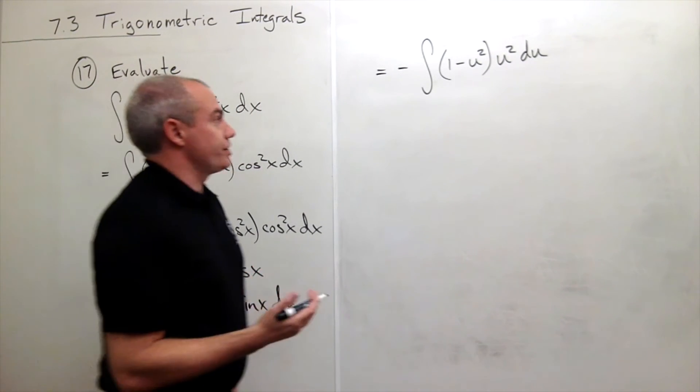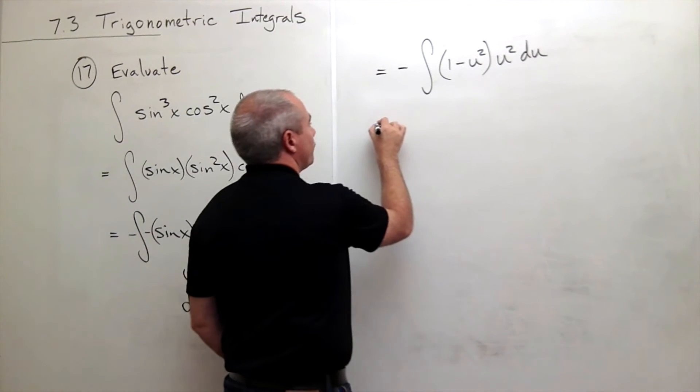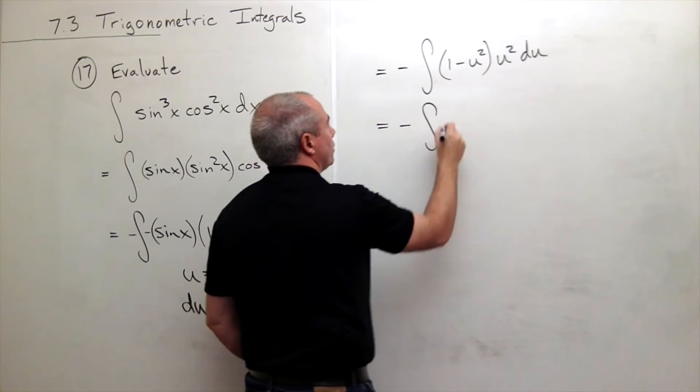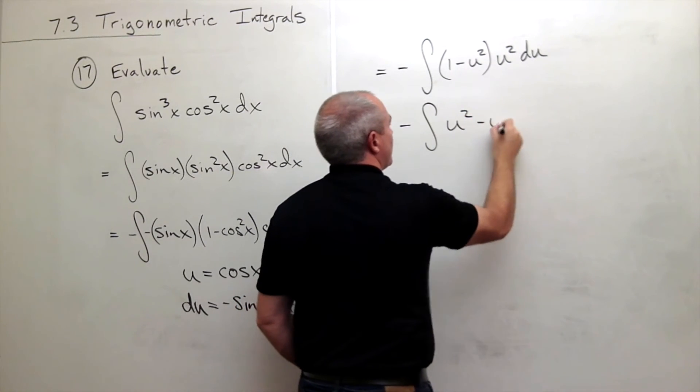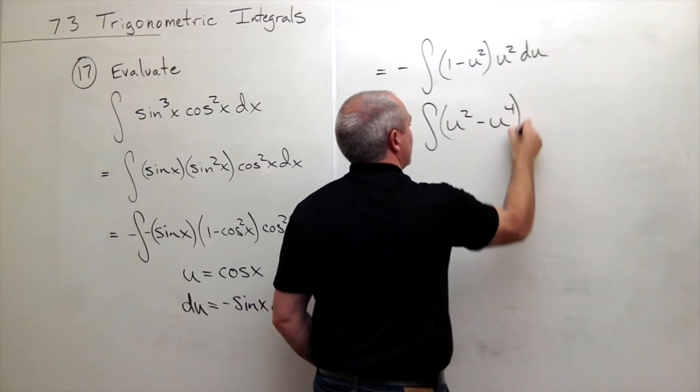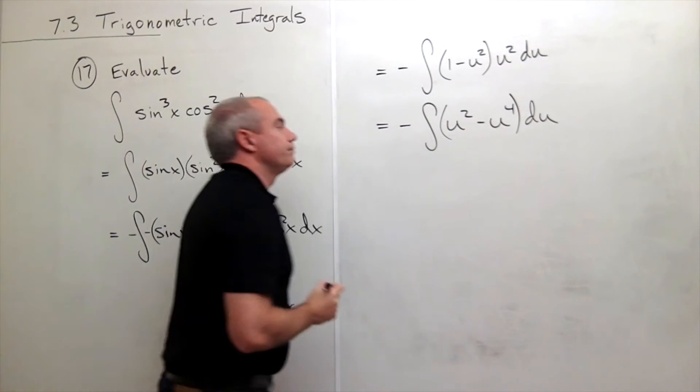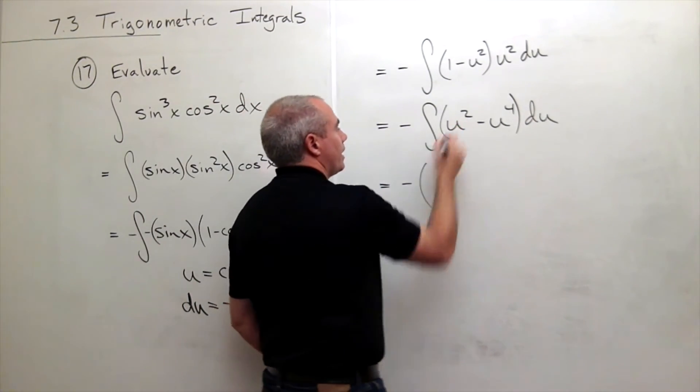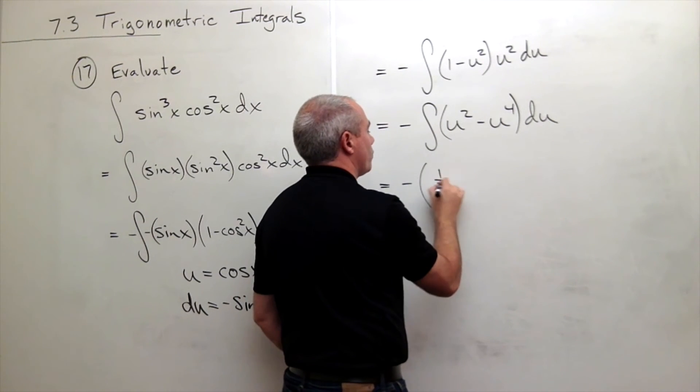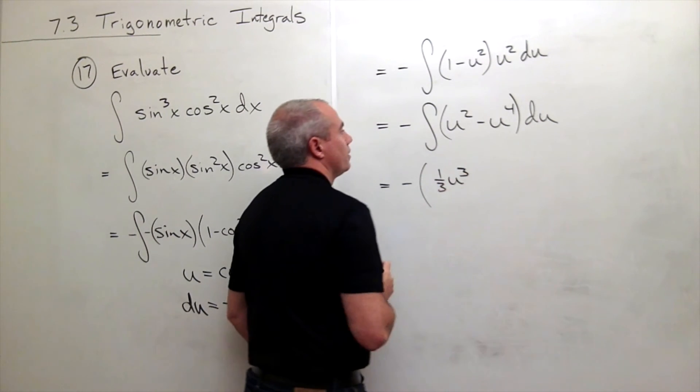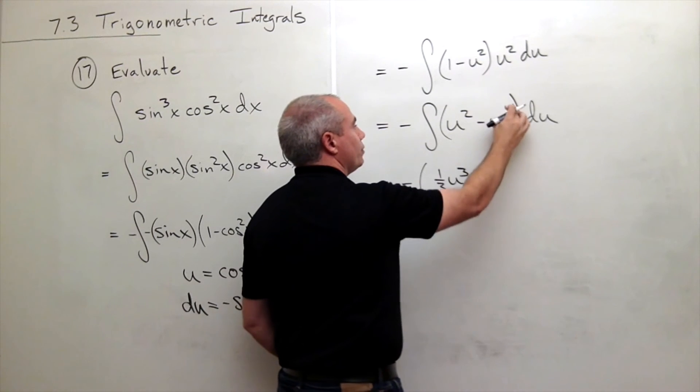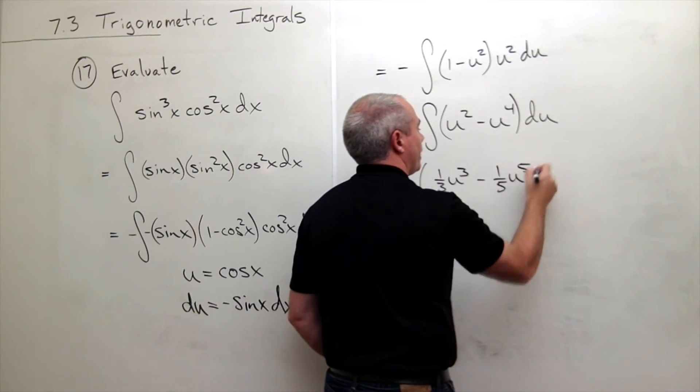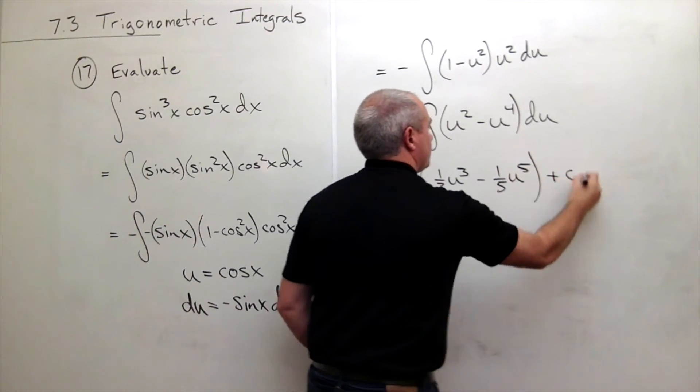Now we're left with this integral which is much easier to deal with. First let's multiply this thing out. I get minus integral of u squared minus u to the fourth du. Let's take an antiderivative. I get minus, antiderivative of u squared is one-third u cubed, antiderivative of negative u to the fourth is minus one-fifth u to the fifth plus a constant.